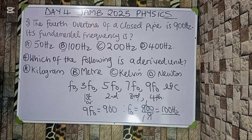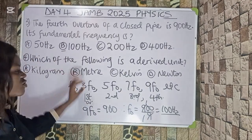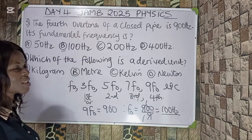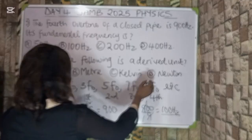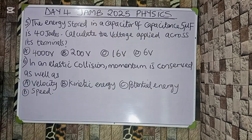Question four: which of the following is a derived unit? Options are: (A) kilogram, (B) meter, (C) kelvin, (D) newton. The kilogram, meter, and kelvin are all fundamental units. Only newton is a derived unit. The correct answer is option D.